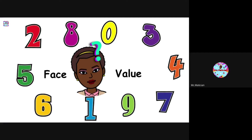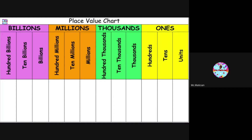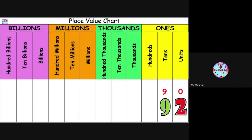Now let's look at place value. We use a place value chart to help us compare the value of digits in different numbers. Let's read the number on the screen: 92. 92 is made up of two digits, 9 and 2. 2 sits in the ones or units column; 9 sits in the tens column. If we multiply the face value by the place value, that gives us the true value — exactly what the digit is worth in the number. So 9 multiplied by tens gives us 90, and 2 multiplied by ones gives us 2.